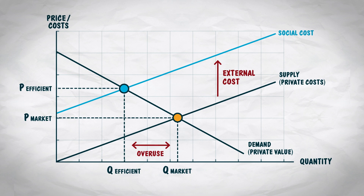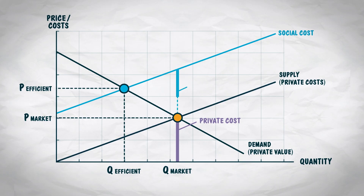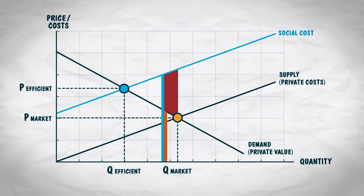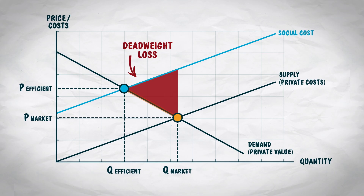This difference represents the overuse of antibiotics. Let's look at the value of the last unit the market produces. The private value is given by the height of the demand curve — that's what consumers are willing to pay. The private cost is given by the private supply curve, but the social cost is given by the higher social cost curve. We don't want to produce this last unit because the social cost is greater than the value. If we don't want to produce that last unit, then we don't want to produce any of the units where the social cost is greater than the value. In other words, this area is a deadweight loss. The social cost of these units is greater than their value. Producing these units means society is worse off — and this represents the loss to society from the overuse of antibiotics.